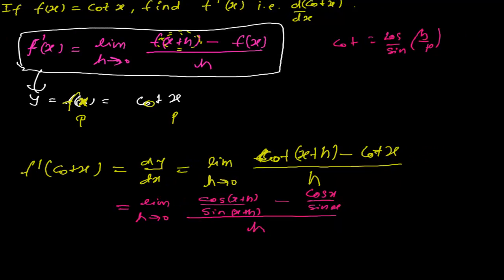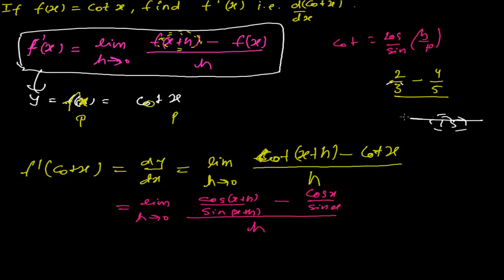As we did in the previous video: when you have something like 2/3 minus 4/5, you take the LCM of 3 and 5, which is 15. Then 15 divided by 3 gives 5, which multiplies the numerator of the first fraction; and 15 divided by 5 gives 3, which multiplies the numerator of the second fraction. I am doing the same here.